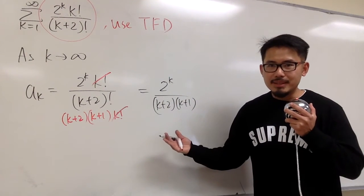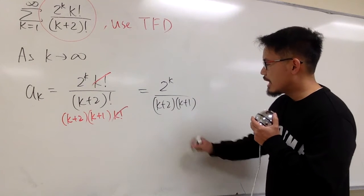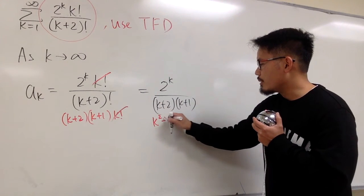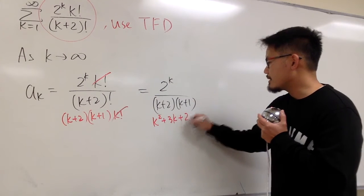I am taking the limit. What can we do? If you would like, multiply this out. You will end up with k squared plus 3k plus 2, right?